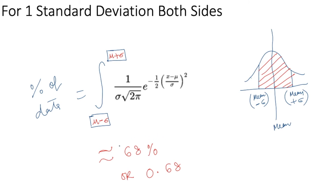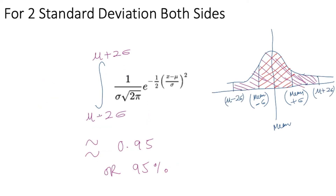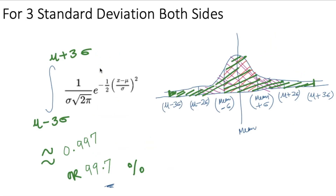If we calculate the integration from mu minus sigma to mu plus sigma, we get 0.68, or 68%. Similarly, for two standard deviations, the lower limit is mu minus 2 sigma and the upper limit is mu plus 2 sigma — integrating over that range gives 0.95 or 95%. For three standard deviations, integrating from mu minus 3 sigma to mu plus 3 sigma gives 0.997, or 99.7%.